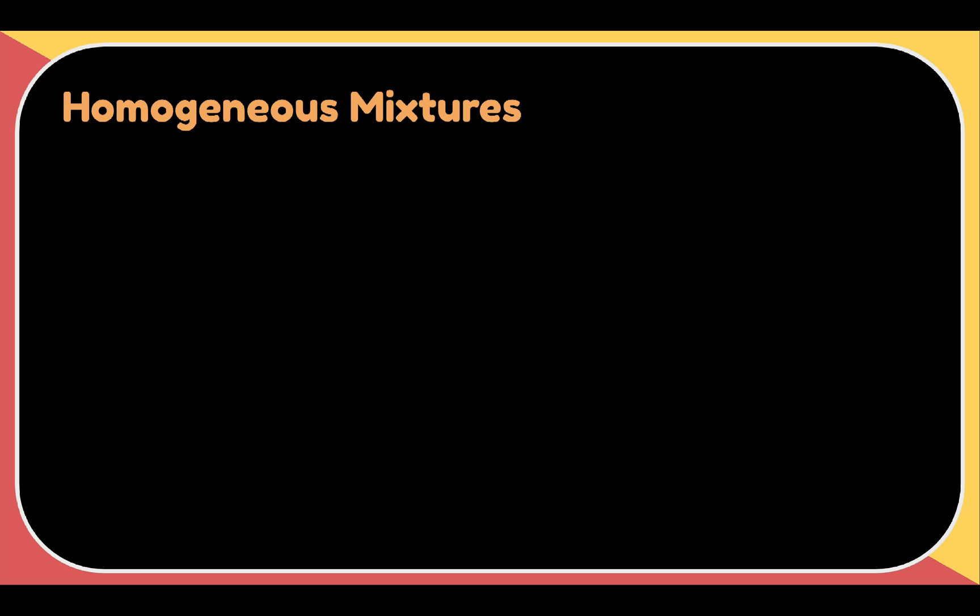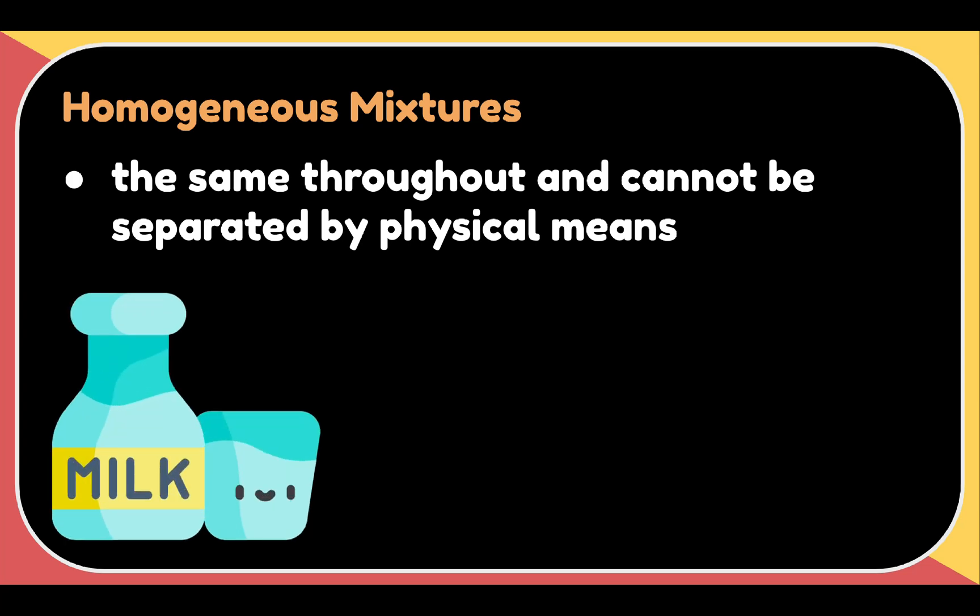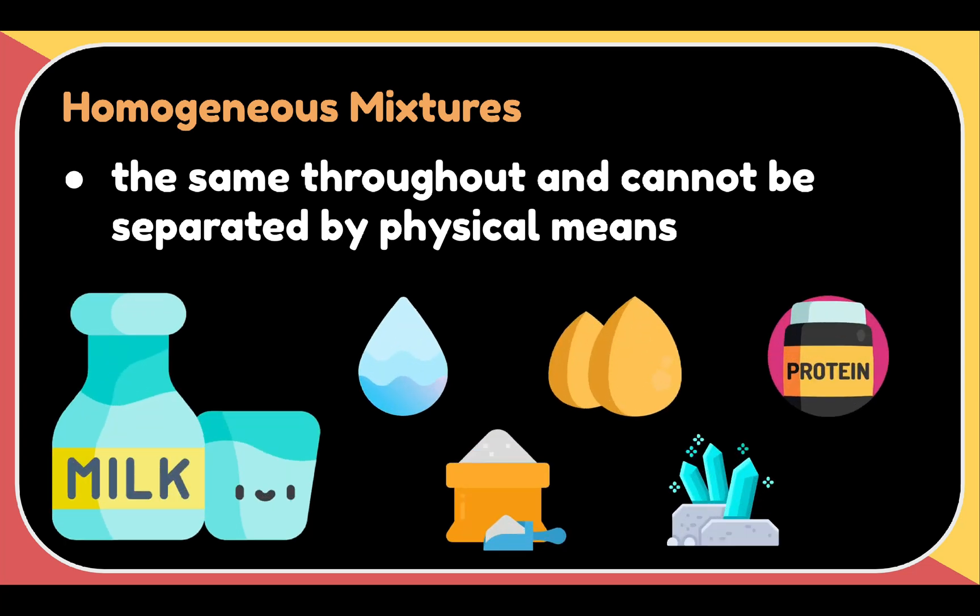Next, we have the homogeneous mixture. Homogeneous mixtures are the same throughout and cannot be separated by physical means. For example, milk. Milk is composed of water, fat, protein, lactose, or the sugar component of milk, and mineral, or the salts. These substances cannot be separated.